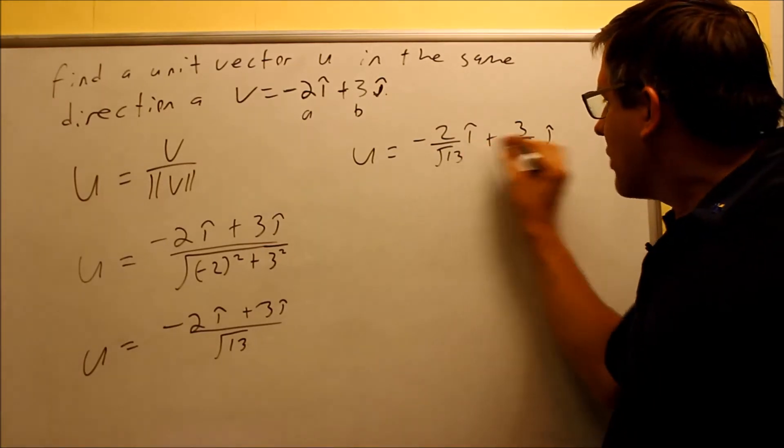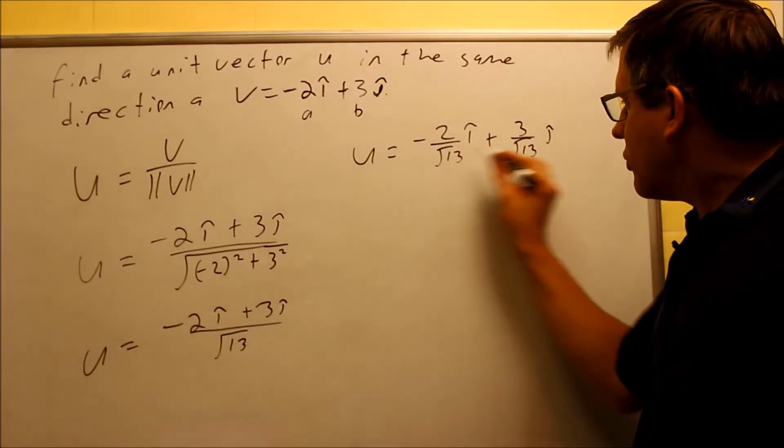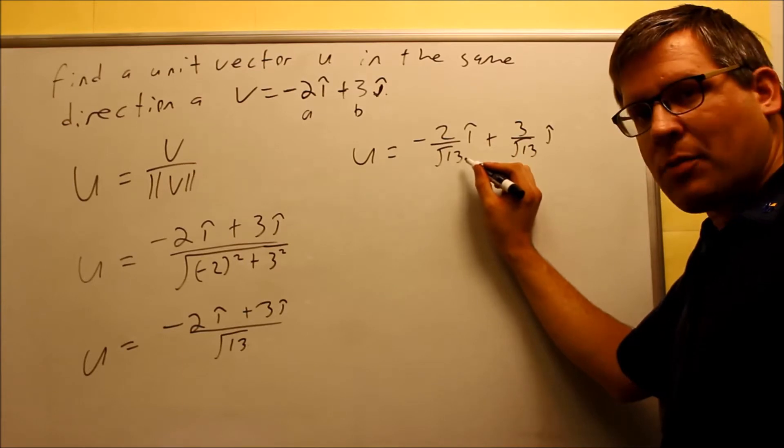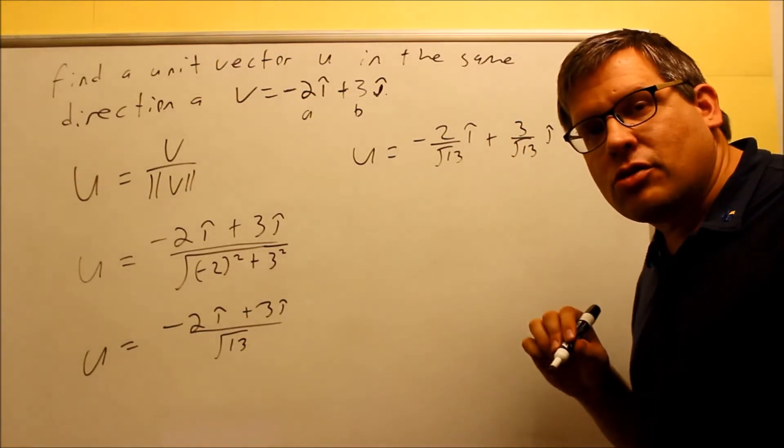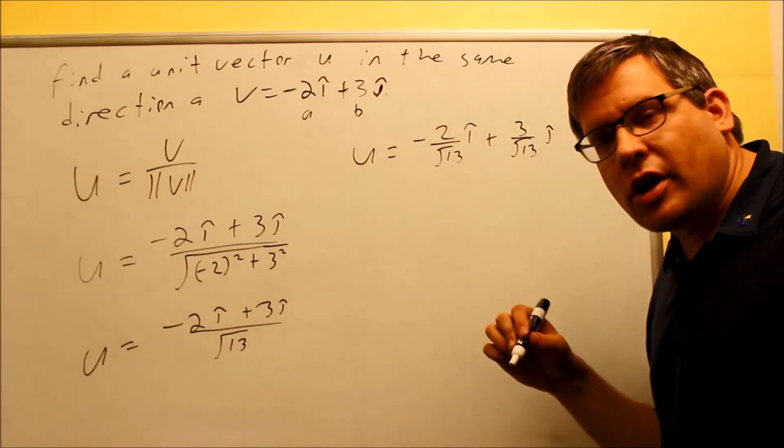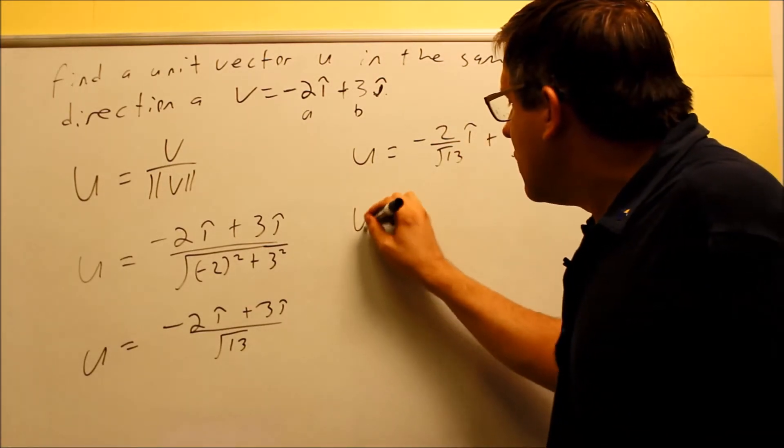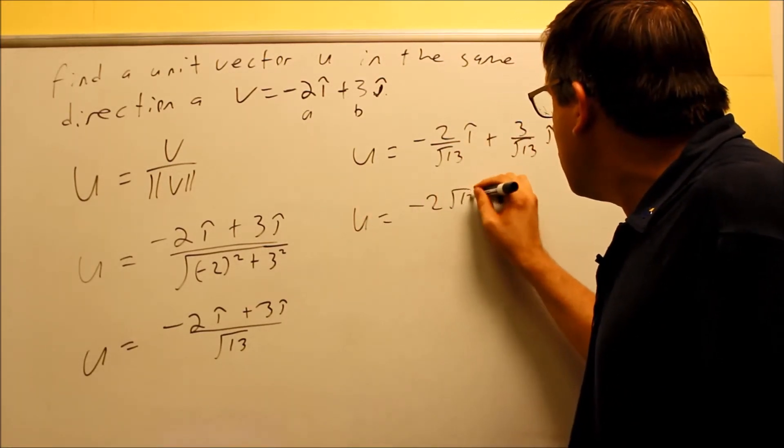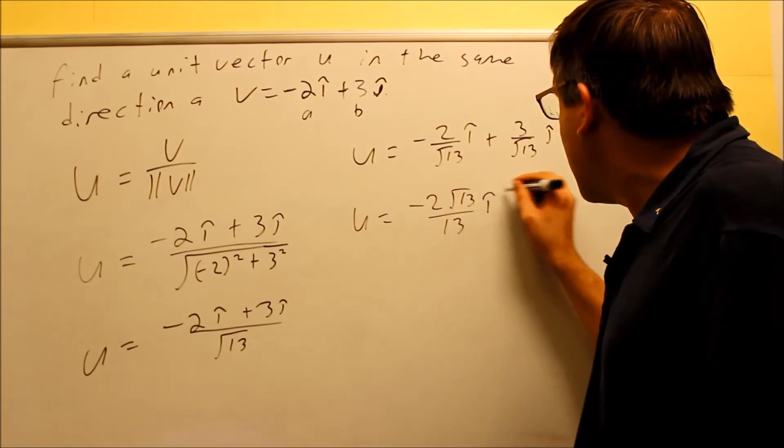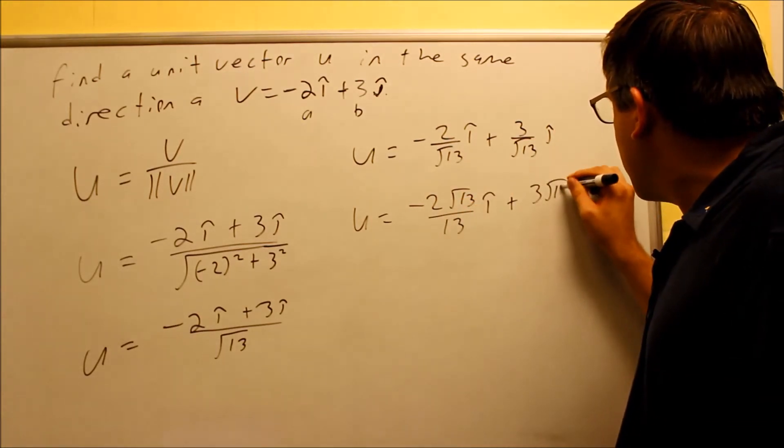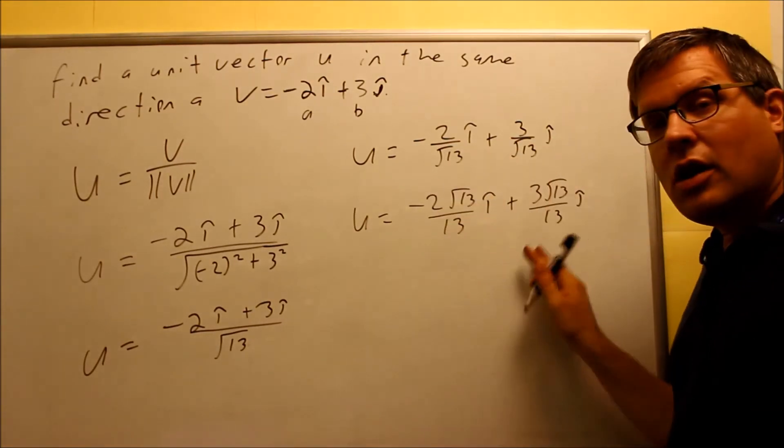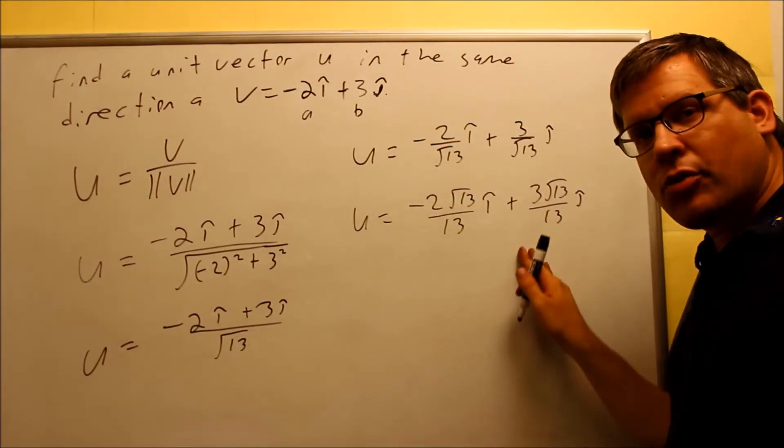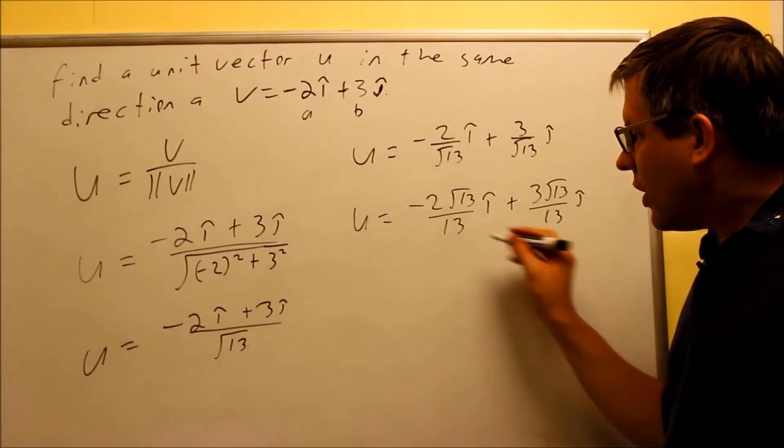So again, what I did was I had to separate this into two separate things. Now square root of 13 does not break down anymore. And you have a radical on the bottom. So depending on your teacher, depending on the program that you're using online, you may need to rationalize these. So if you rationalize it, you get negative 2 square root of 13 over 13I and 3 square root of 13 over 13J. So that would be your final answer here.